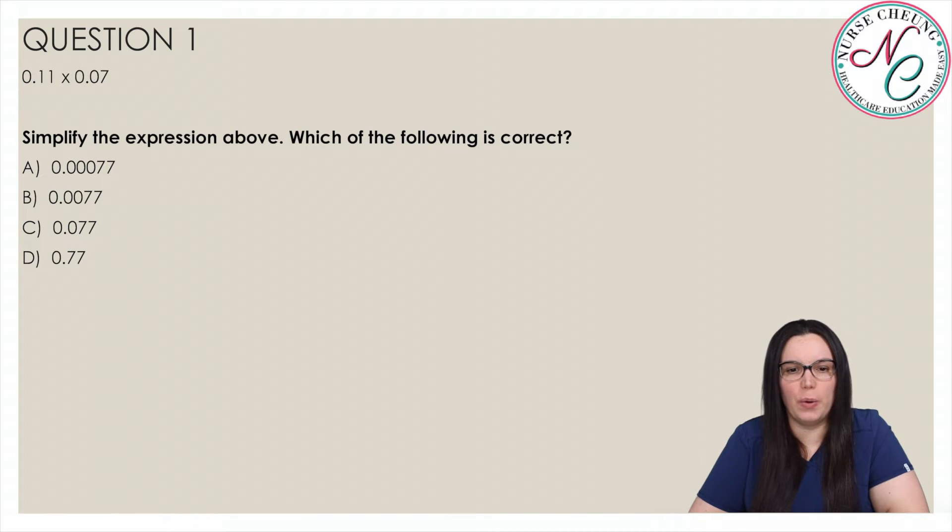Question 1. 0.11 times 0.07. Simplify the expression above, which of the following is correct? Is it A, 0.00077,